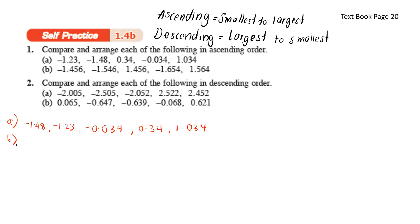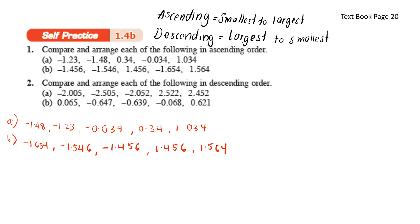For b, the smallest number is negative 1.654, followed by negative 1.546, negative 1.456, positive 1.456, and 1.564.